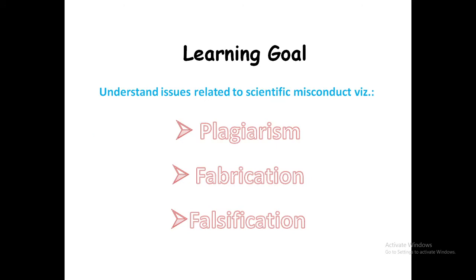Here you see the learning goal. In order to ease our learning, we have to understand the following issues regarding scientific misconduct: Number 1 is plagiarism, Number 2 is fabrication, Number 3 is falsification.